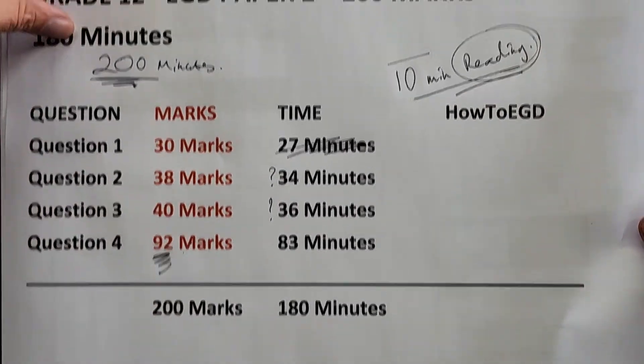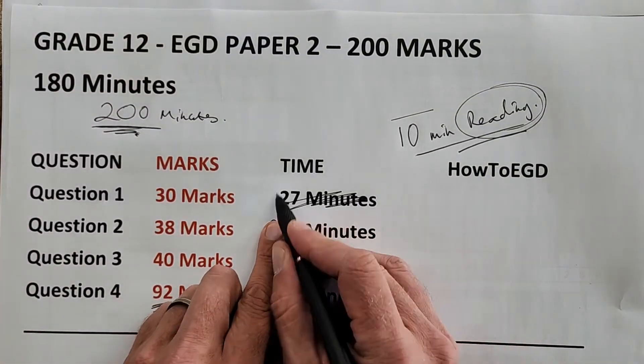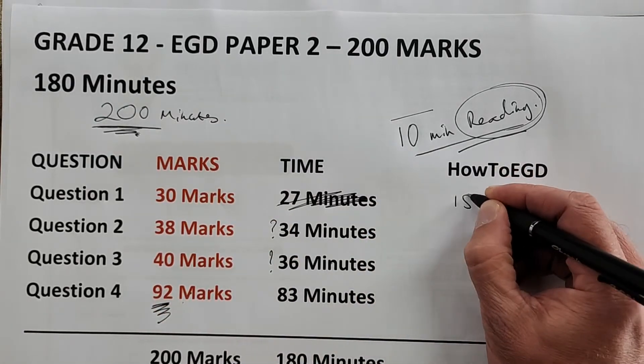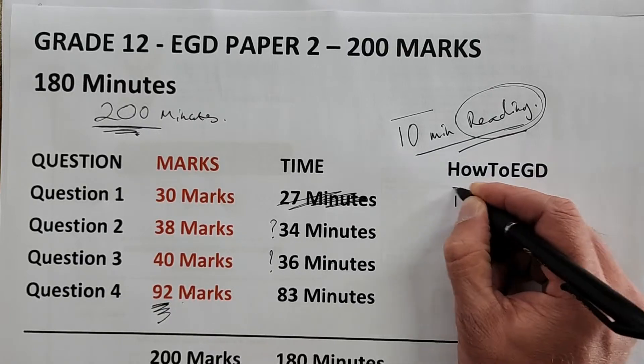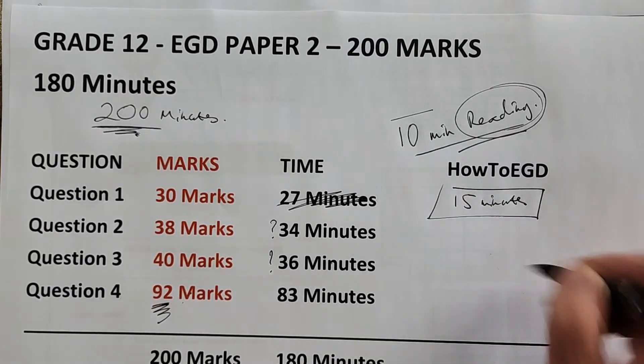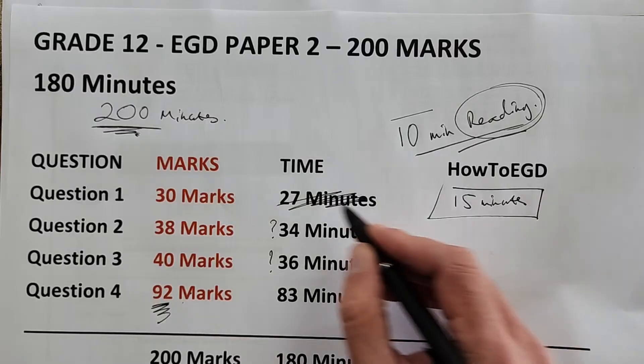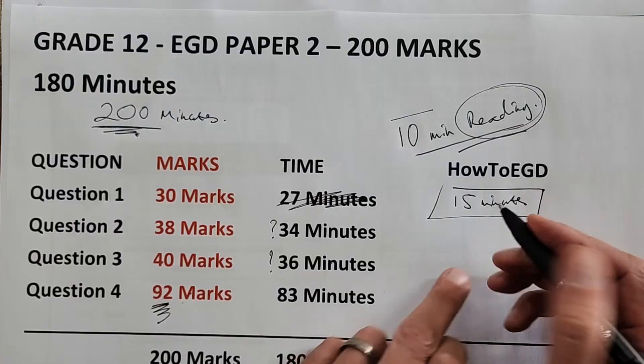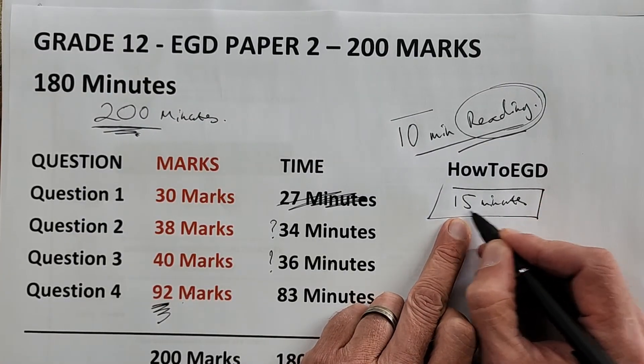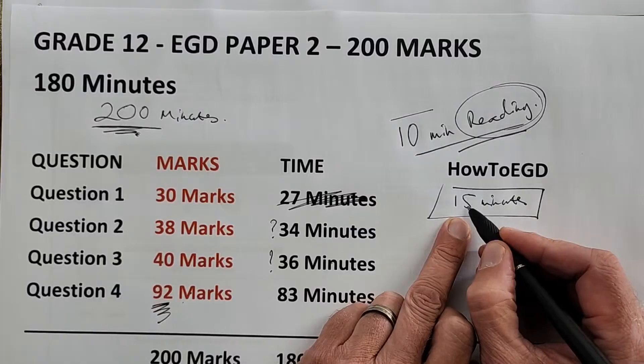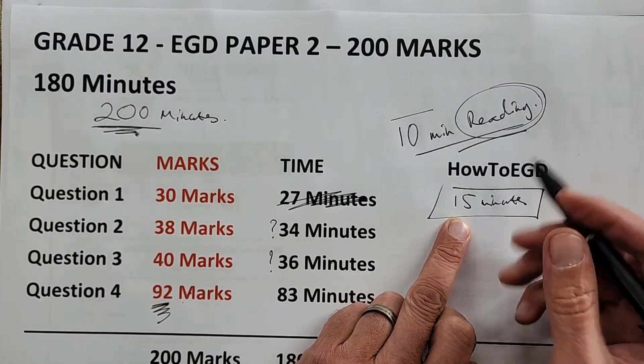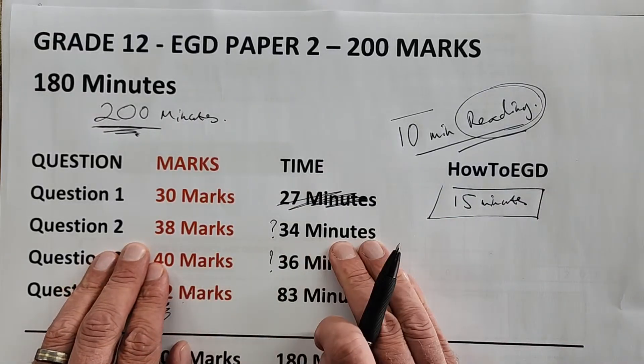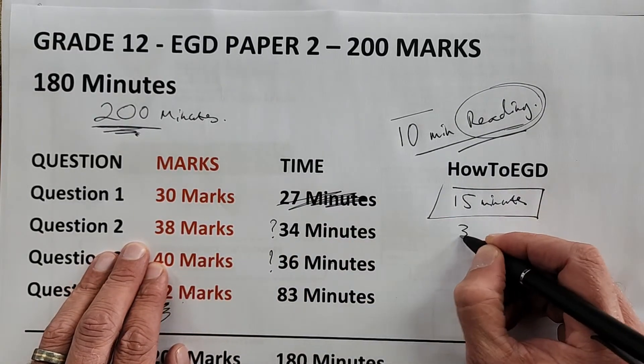If you have that 10 minutes reading time, that cuts this 27 minutes way down. My proposal is that you have a watch next to you and time yourself. When they say start writing, you start that clock. After 15 minutes, you should be finished with Question 1. If you're not finished, make sure you fill in the easy ones first, then spend time on the more difficult ones. But at 15 minutes, you go on to Question 2.